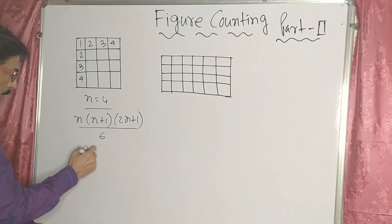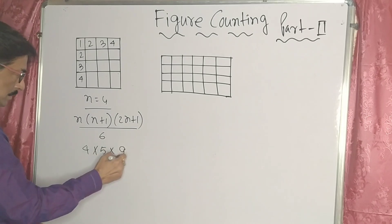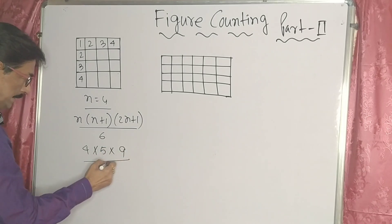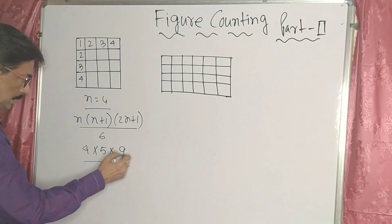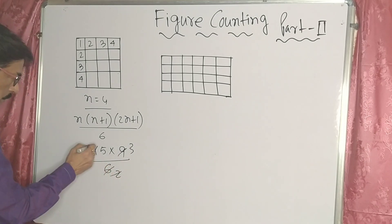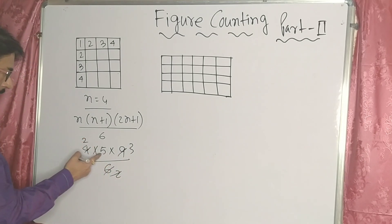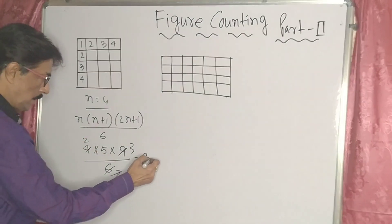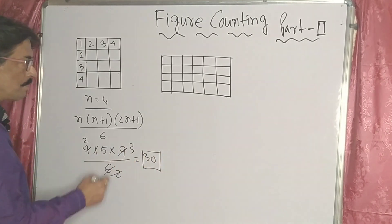So 4 into 5 into 9, divided by 6. Simplifying: that gives us 30. So there are 30 squares inside the figure.